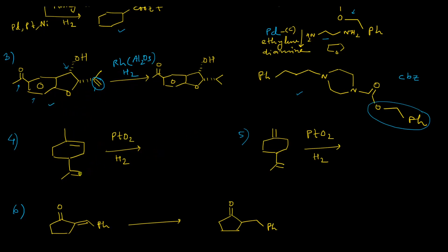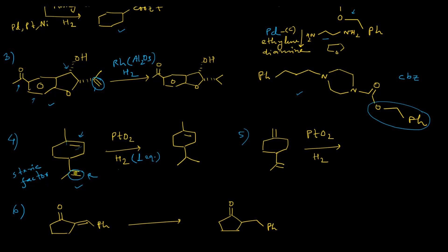The next example involves a compound treated with platinum oxide in the presence of hydrogen gas, where steric factors control the reactivity of the double bonds. One double bond is less crowded than the other, so hydrogenation of the less hindered double bond occurs first. If the reaction is stopped after one equivalent of hydrogen gas is consumed, we obtain the product where selective hydrogenation of that less hindered double bond has taken place.